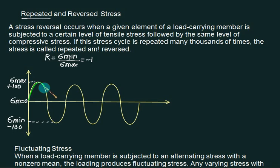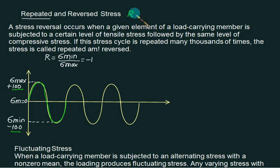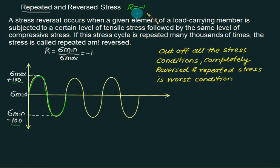Why is the word 'repeated' used? From this point to this point is one cycle, and the second cycle will also remain the same — that is why it is called 'repeated.' And why 'reverse'? One time you are getting plus 100, and the second time you are getting minus 100 — that is called repeated reverse stress. For this, r equals minus 1, which is the worst condition. The part has minimum life when r equals minus 1.